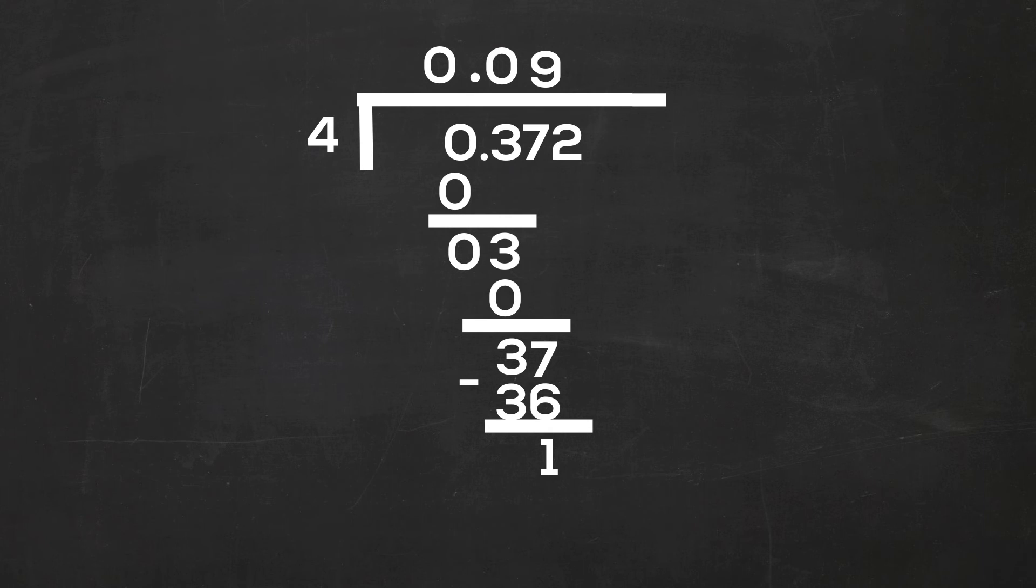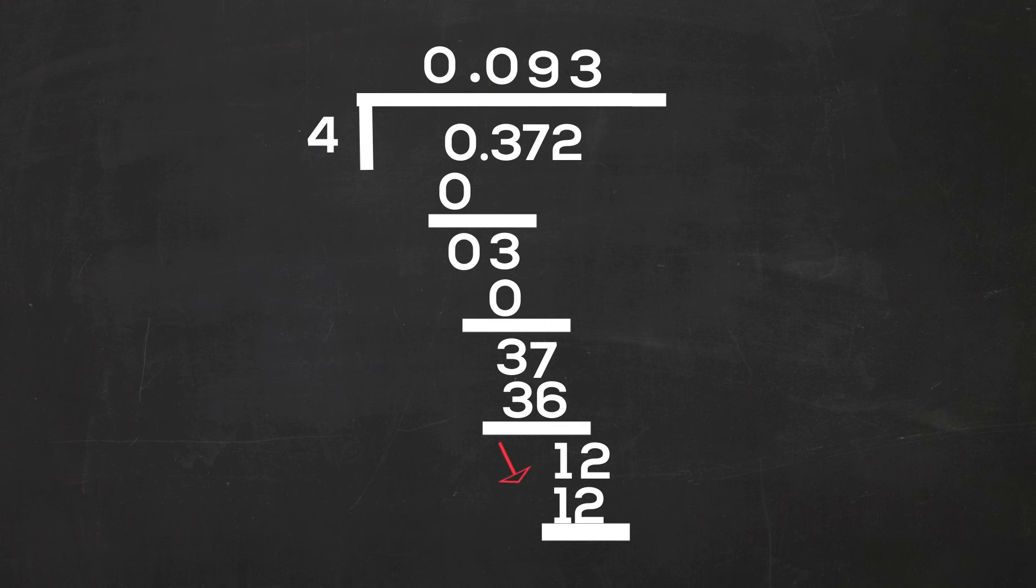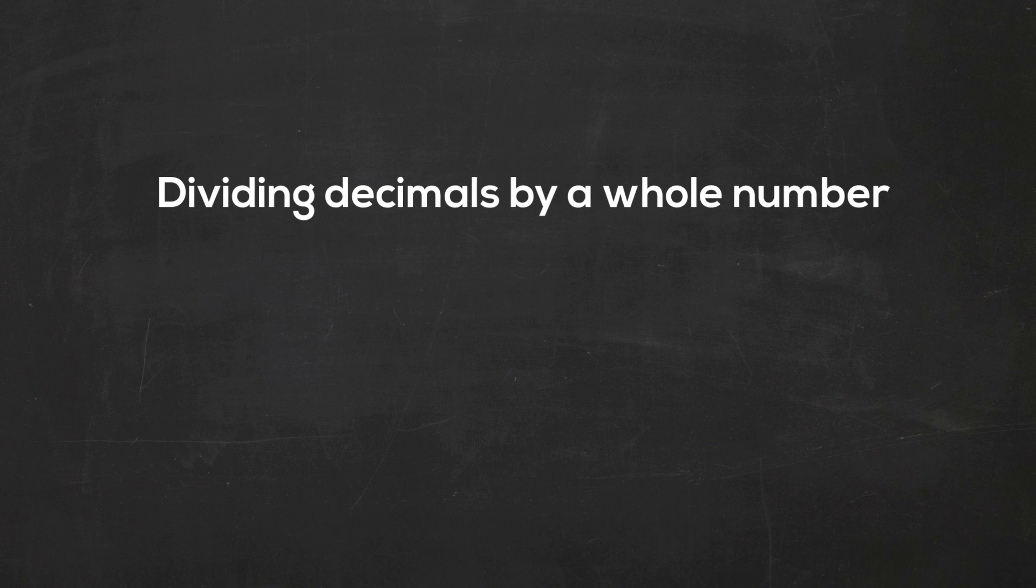Now I will bring down the 2. 4 goes into 12 three times. 3 times 4 is 12. When I subtract 12 minus 12, I get 0. So, 0.372 divided by 4 is 0.093. I hope that helps in learning how to divide decimals by whole numbers. If you need additional help, this playlist might help.